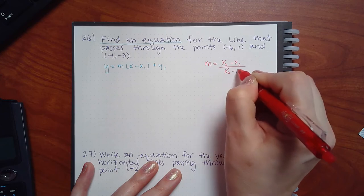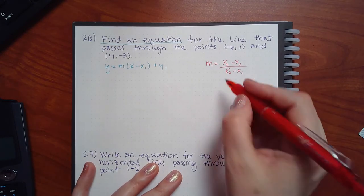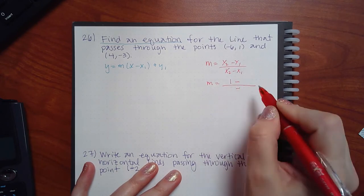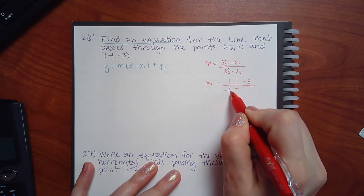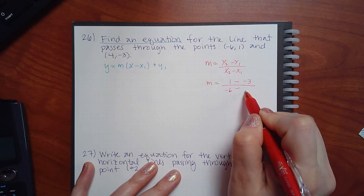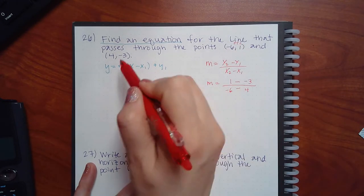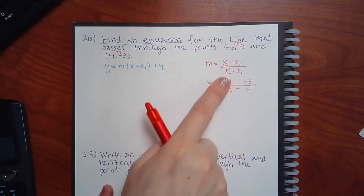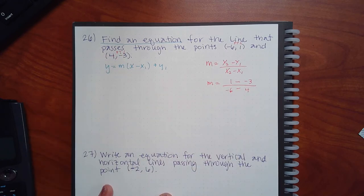So you basically have a pre-step before you can do the real step. What is y2? Positive one. What is y1? Negative three. What is x2? Negative six. And x1? Positive four. He called this point two and this one point one — that's fine, as long as both of these are in the front, both of these are in the back, y's on top, x's on the bottom.